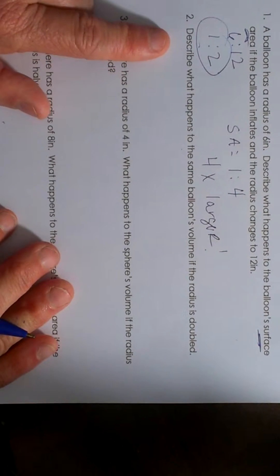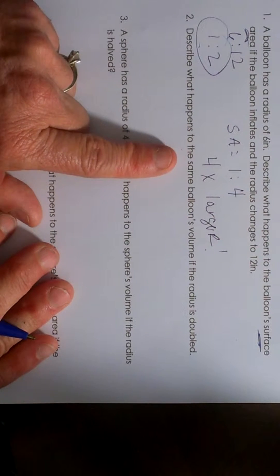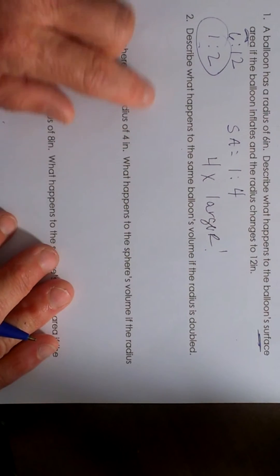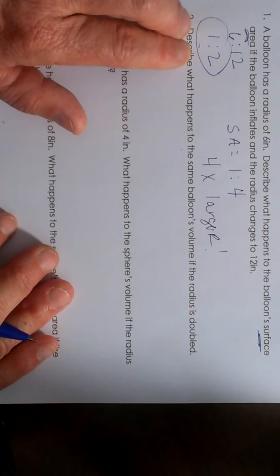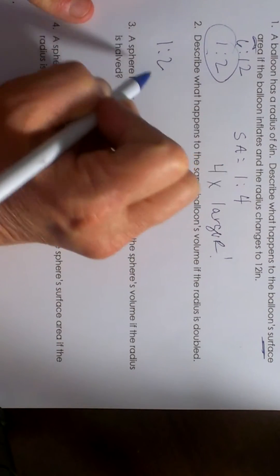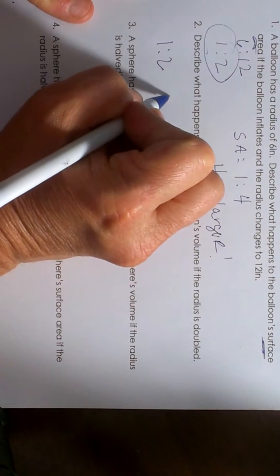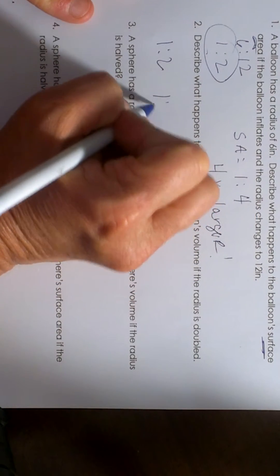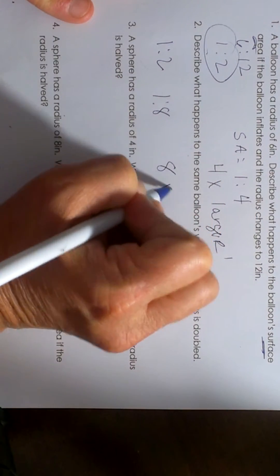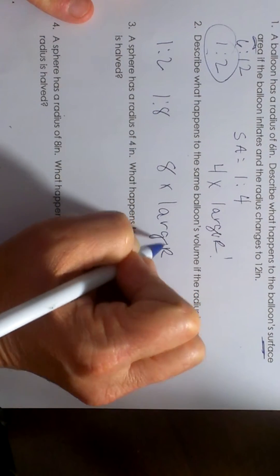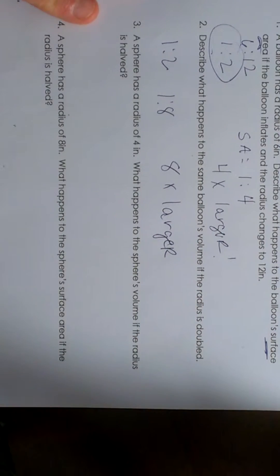Describe what happens to the same balloon's volume if the radius is doubled. Again, we have the radius doubling — a one to two relationship. To get the volume you cube it, so it's going to be one to eight. The larger balloon's volume is going to be eight times larger.